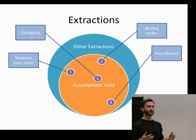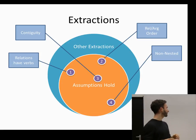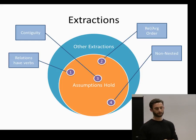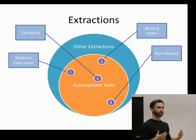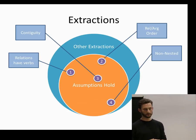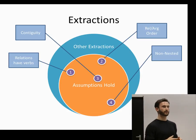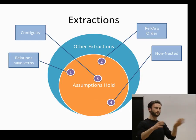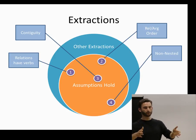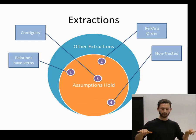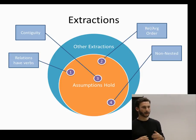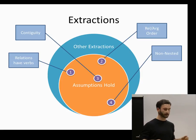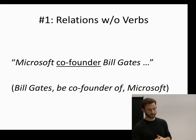The problem is that these assumptions about extractions don't always hold. The idea of OLLI is to take the set of extractions for which these assumptions do not hold and try to identify them. There are four different assumptions: first, relations have verbs; second, there's the ordering of the relation and arguments within the sentence; third, there's the contiguity assumption that each unit is an atomic piece that isn't interrupted; and finally, that they're non-nested — a relation can't occur within another relation.